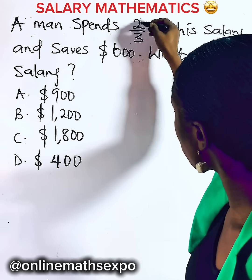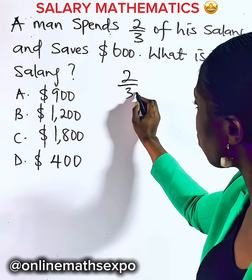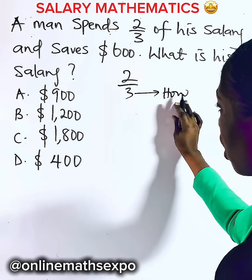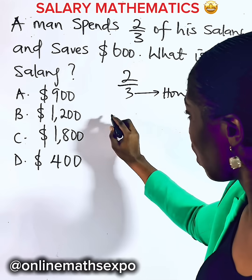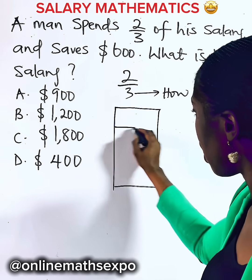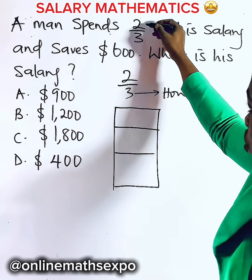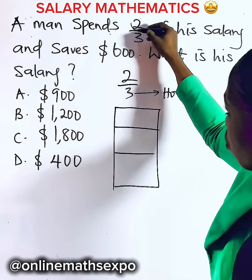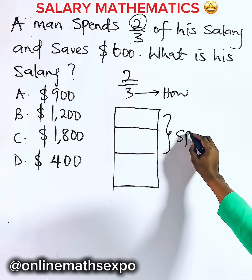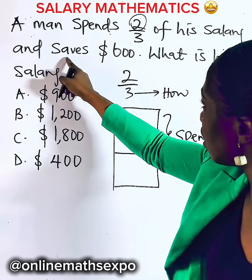He spends two-thirds. The three here shows you how many parts the money was shared into — the total number of parts. So quickly use your fraction bar. He shared it into three, that's what this means. And this two shows you how many parts were spent. So he spends these two and he saves the rest.